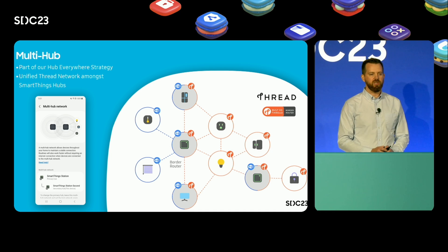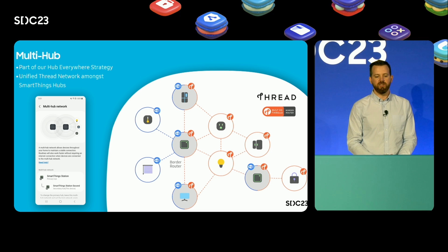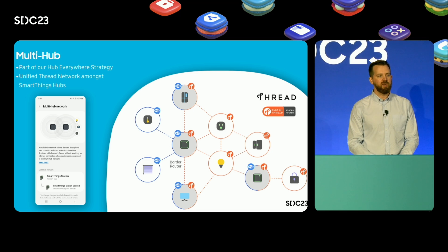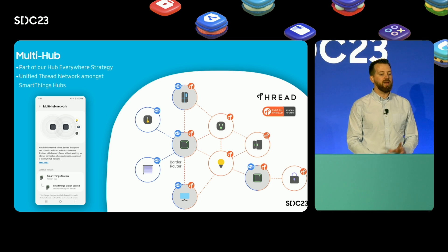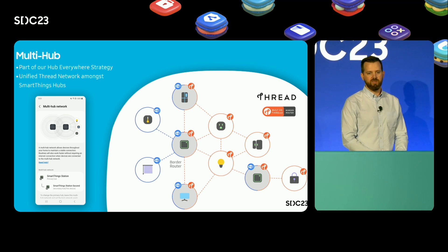Now I want to shift gears and highlight some major new features that improve the experience for Matter devices and much more. Charles talked about the hub everywhere strategy and how users may end up with multiple hubs in their home — we want to leverage those hubs to make the smart home experience better and more reliable. Starting with the SmartThings Station, users can now create a multi-hub network in their homes, extending the range and reliability of their network. The additional hubs become part of the existing Thread and Zigbee networks, enabling devices to connect to the closest or most optimal hub, allowing users to place more devices in more places while still experiencing local connectivity.